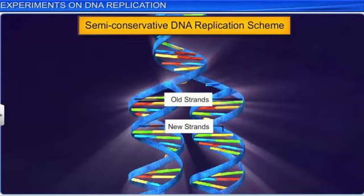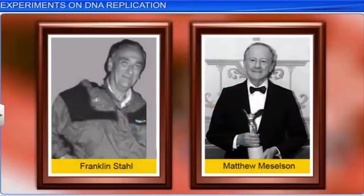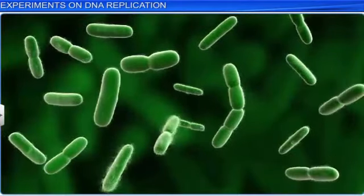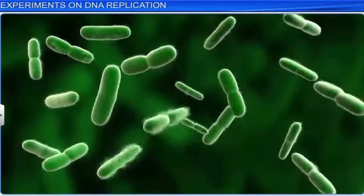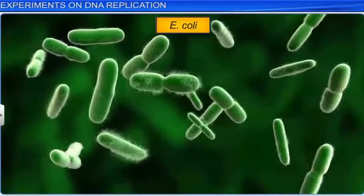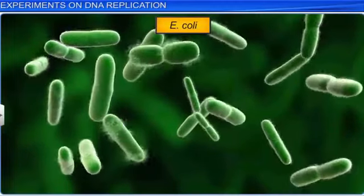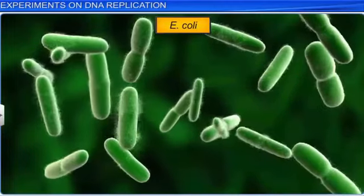In 1958, to find conclusive evidence for this scheme of semi-conservative DNA replication, experiments were conducted by scientists Matthew Meselson and Franklin Stahl on bacteria Escherichia coli, or E. coli, a bacteria that divides every 20 minutes.